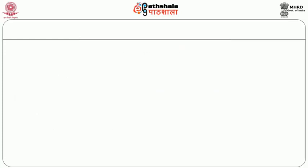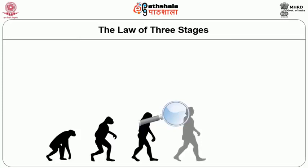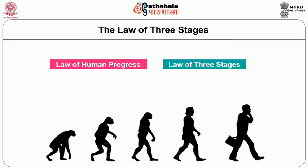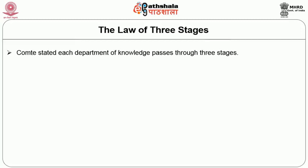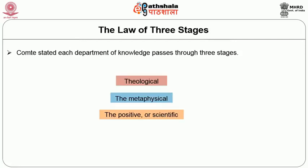The three stages of Auguste Comte: Auguste Comte believed that human history had transformed itself in three stages. He stated that each department of knowledge passes through these three stages — the theological, the metaphysical, and the positive or scientific.